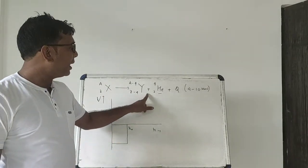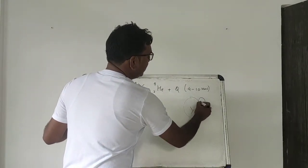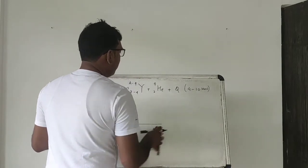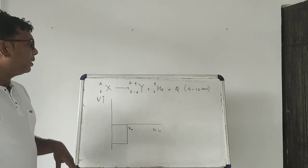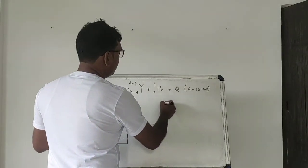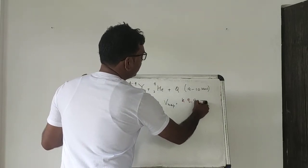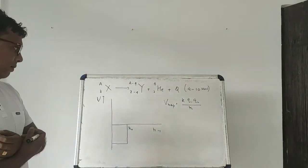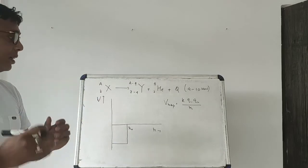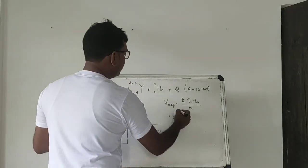The repulsive potential between Y and helium can be estimated as V_c = k·q₁·q₂ / r, where k = 1/(4πε₀), q₁ is the charge of Y which is (Z−2)e, and q₂ is the charge of helium which is 2e, divided by r. So V_c = k·(Z−2)·2·e² / r.